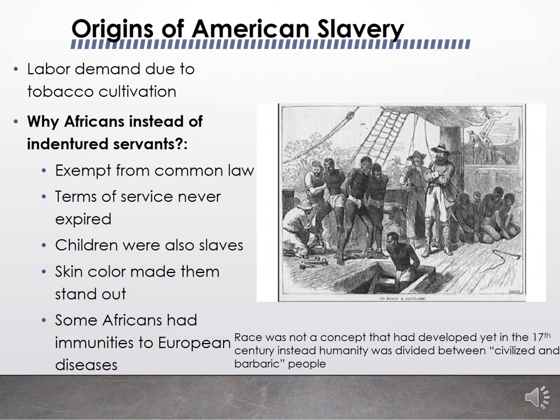During the 17th and 18th centuries, race was not the primary category of distinction — people were more often categorized as 'civilized or barbaric' and Christian or non-Christian. Those were more important distinctions than skin color. However, the system of slavery that developed in the United States became solely based on skin color, and racial discrimination based on skin color became a predominant theme throughout American history.